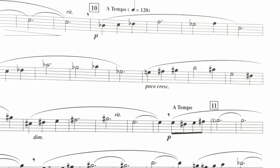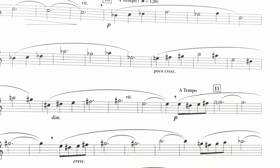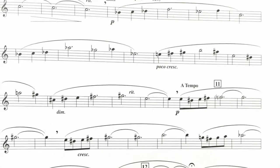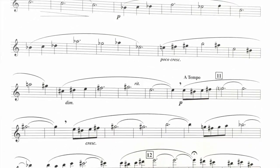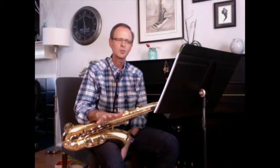Now we've reached rehearsal 10 and we have a return of our quarter note 120. All of our energy has just subsided. It's gone down to a nice gentle, calm feeling just like we had at our opening at major A. Same melodic contour again at a different tonal level. Here what I would like to do, just because it's a reiteration, is to bring down your dynamic all the way down to pianissimo. Really bring it down soft and subtle.